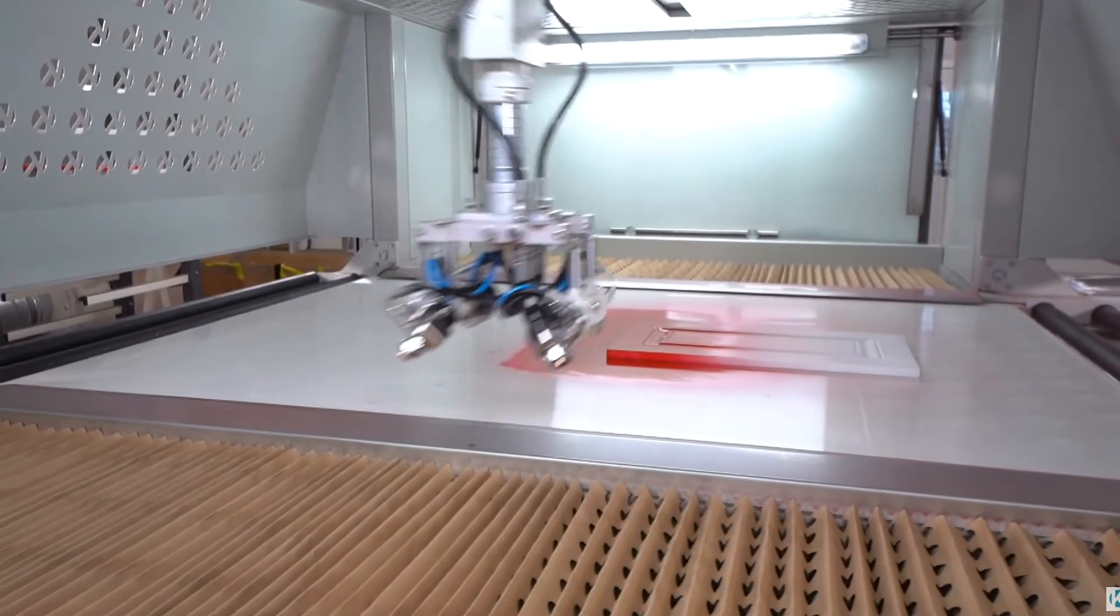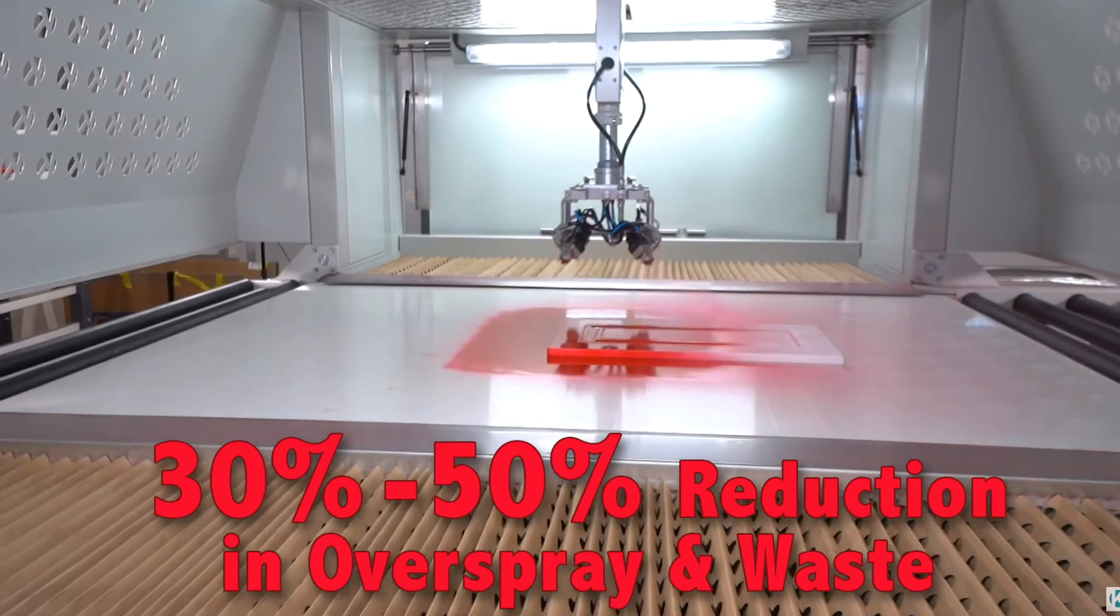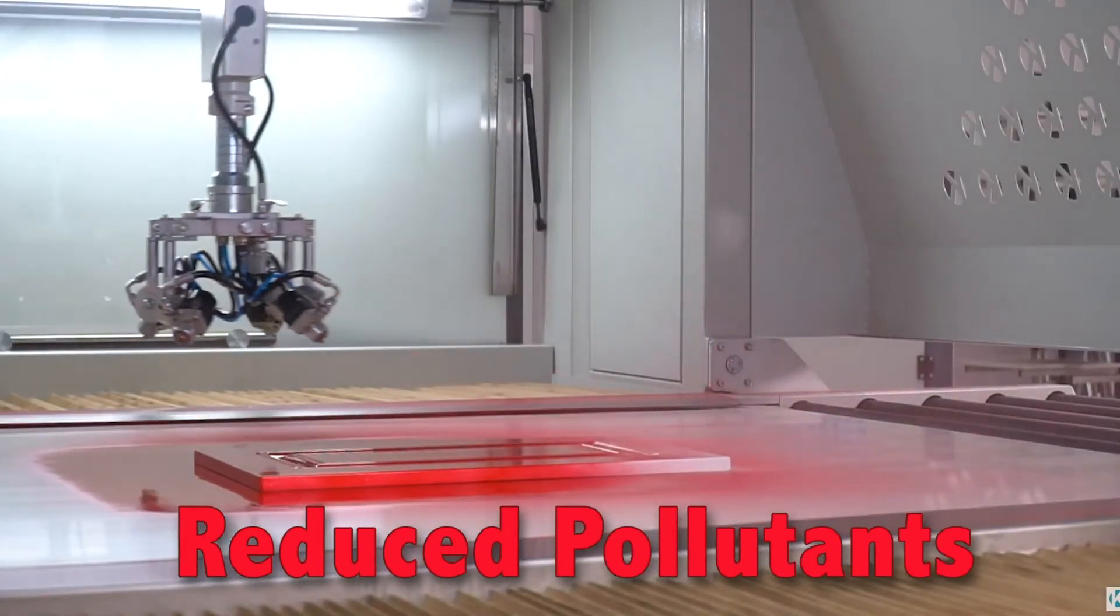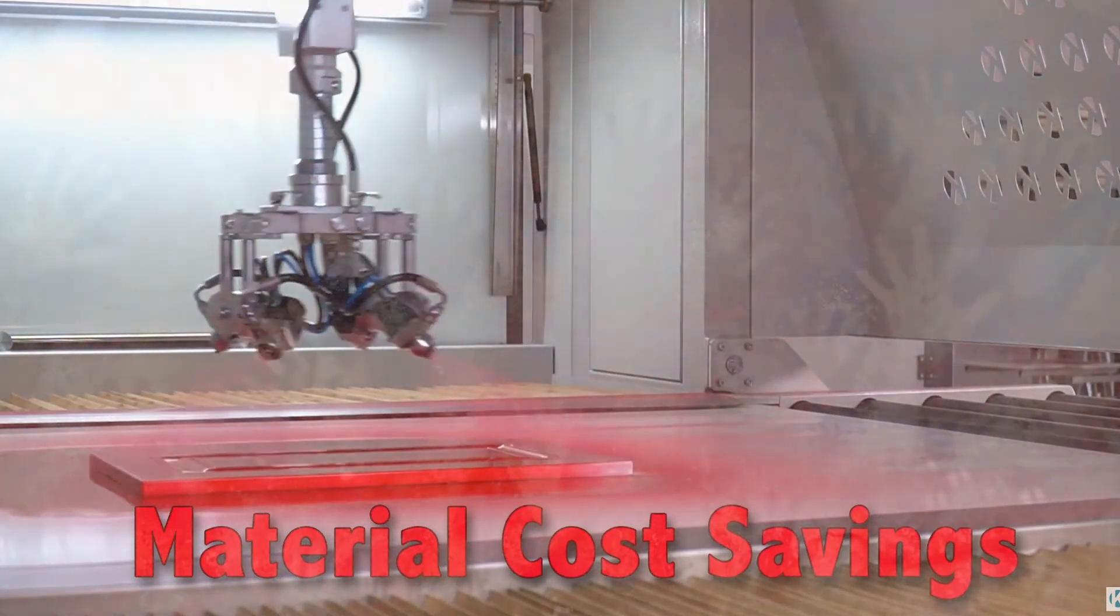Studies indicate that maximizing the reciprocating spray machine potential can reduce overspray and waste 30 to 50%. This translates to a dramatic reduction in pollutants entering the atmosphere and a cost savings in materials.